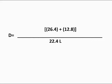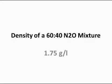And now we have 26.4 plus 12.8. That gives us 39.2 grams over 22.4. That brings us a density of a 60-40 nitrous oxide mixture of 1.75 grams per liter.